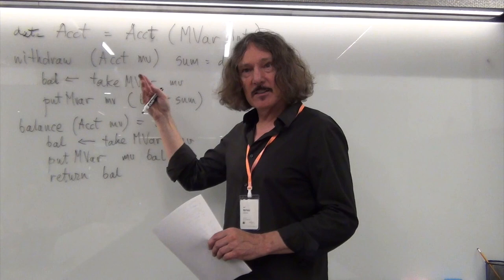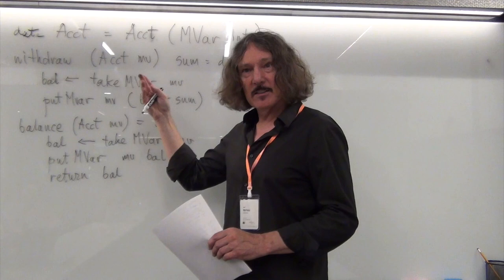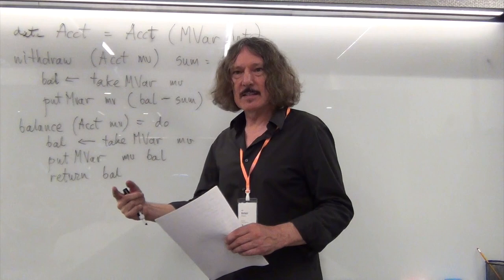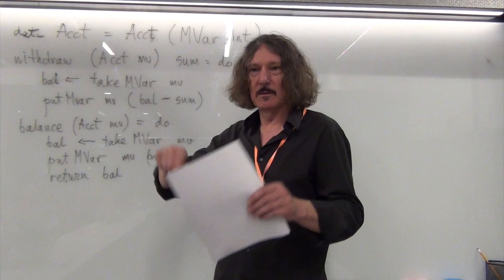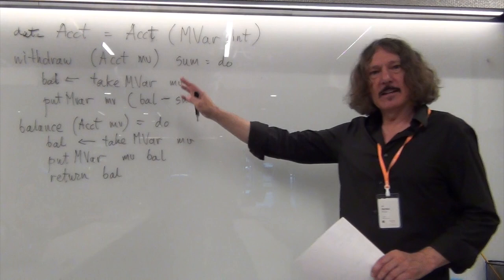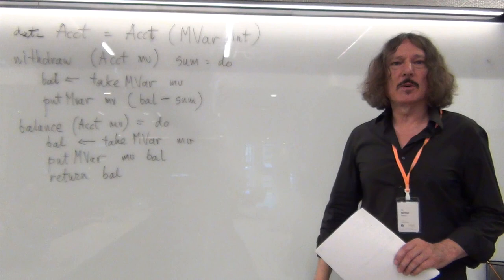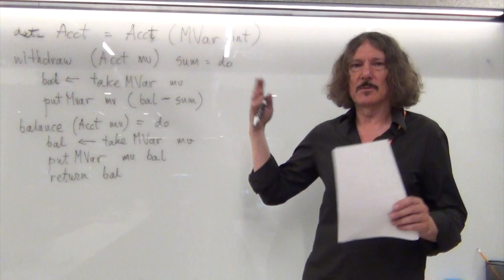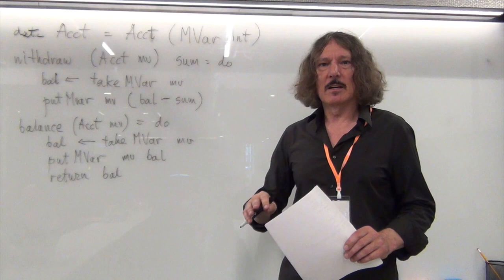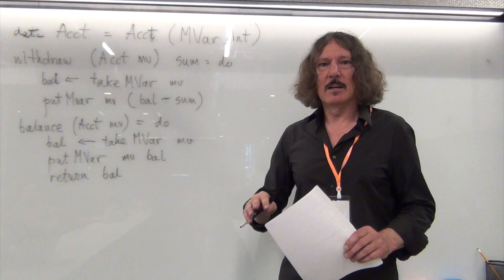So that's withdraw and balance — the shared data here is just one integer, a very simple model. Simon's book implements a more complicated example with desktops and windows, moving windows between desktops, but this is simpler. Now we want to compose things — we want multiple accounts. As long as you just withdraw from an account or read a balance, it's fine — it's locked. But we want to transfer money between accounts.